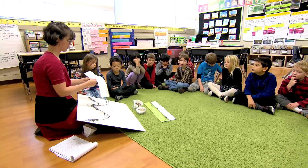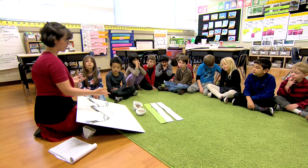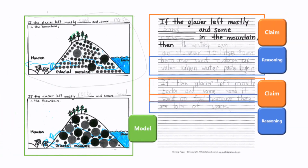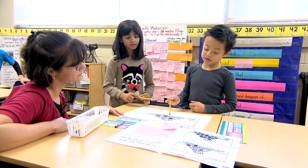If-then statements help students understand that there's a cause and effect. Thinking about different conditions helps them explain that there are lots of different science ideas that could be happening to explain a phenomenon, so they're thinking about a specific condition as the cause.